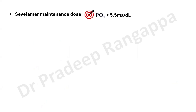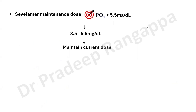The target is to maintain phosphorus below 5.5 mg/dL. For CKD patients on Sevelamer, phosphate levels should be monitored. If phosphate is in the normal range of 3.5 to 5.5, maintain the current dose. If it falls below 3.5 mg/dL, reduce the Sevelamer dose by 400 to 800 mg per meal depending on the current dose. The dosage must be calibrated and titrated to the monitored phosphate levels.